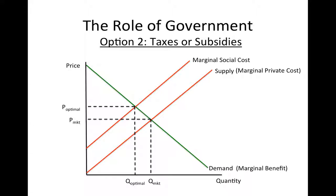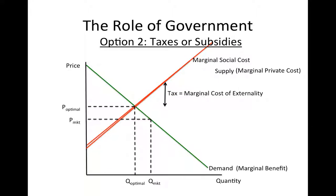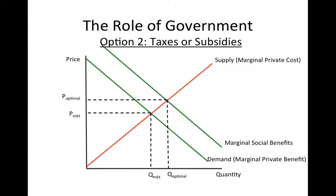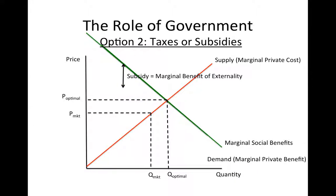The government's second option is to either tax or subsidize the production or consumption of the good that generates the externality. In the case of a negative externality, the government can set a tax equal to the marginal cost of the externality. This tax will increase sellers' costs and will shift the supply curve up. If the tax is set at the right level, sellers' private costs will coincide with the social costs of the good, and the tax will result in an efficient level of the externality generating good. In the case of a positive externality, the government can subsidize consumption of the externality generating good. The value of the subsidy should equal the marginal benefit from the externality. This will increase the demand for the good and move the market quantity closer to the optimal quantity.